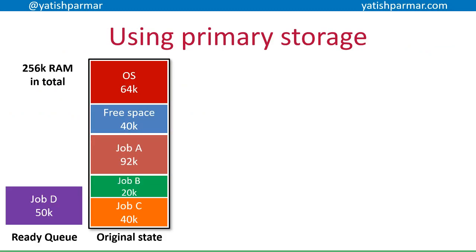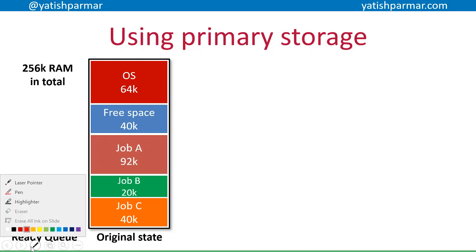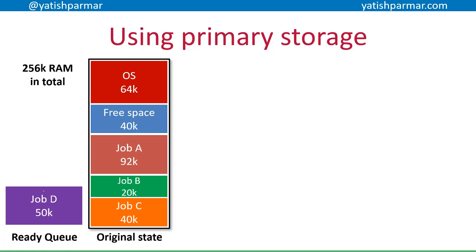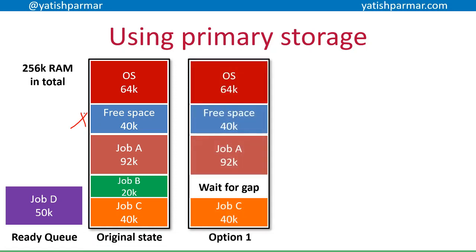When we want to use primary memory we have a couple of options. For example, here's the current state of my memory: the operating system takes up 64k, I've got 40k of free space, and three other jobs taking up certain amounts of space. Job D needs 50k of memory, so at the moment I don't have enough contiguous space to run it.